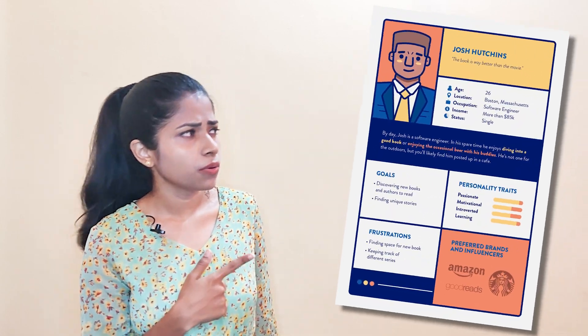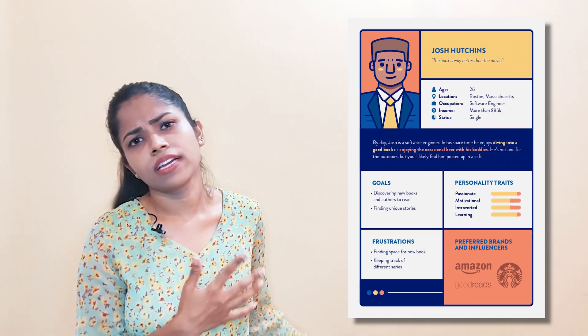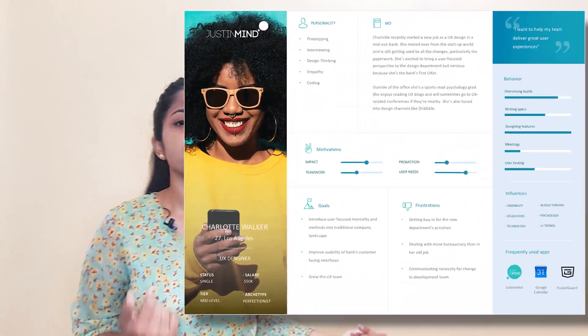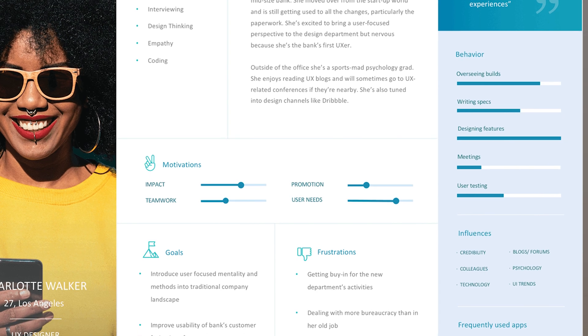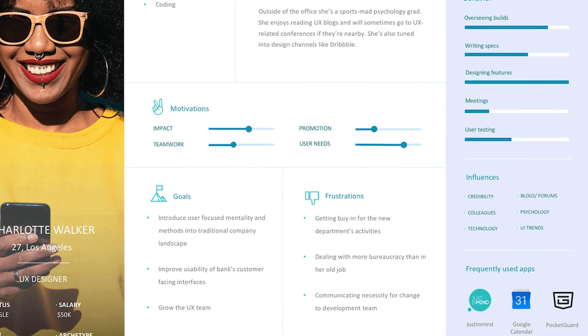Majorly, a user persona will look like this — it can come up to one to two pages. The description should include their skills, behaviors, attitude, goals, barriers, technical skills, interests, and what applications they use. To collect all these details together is called a user persona.